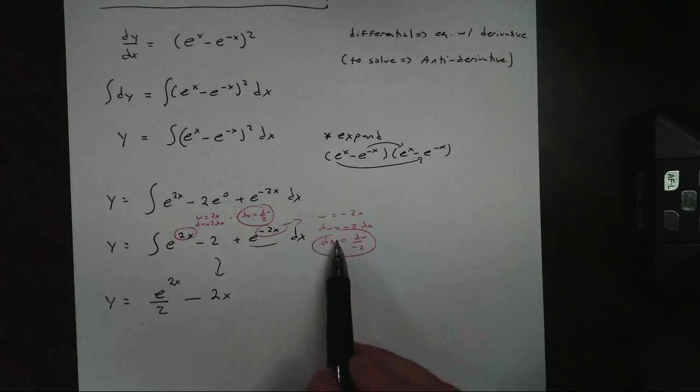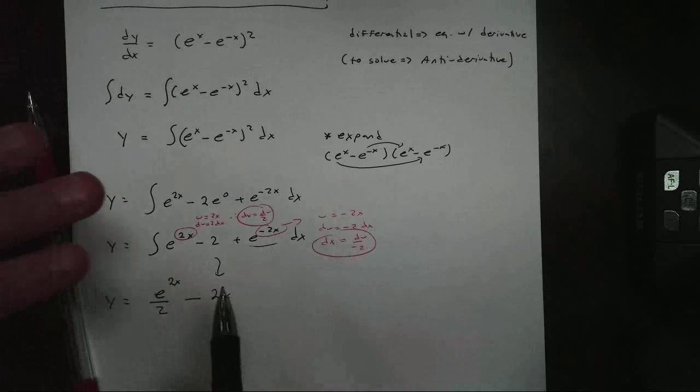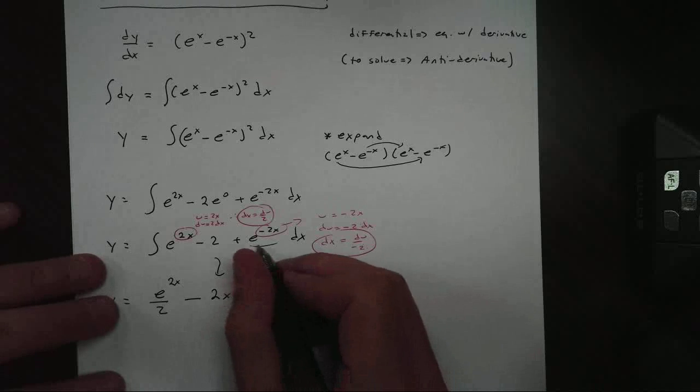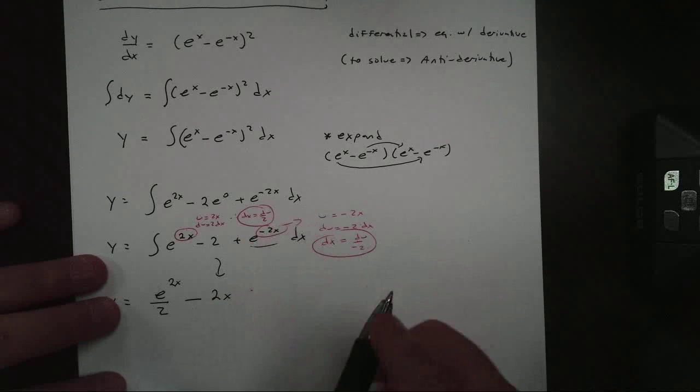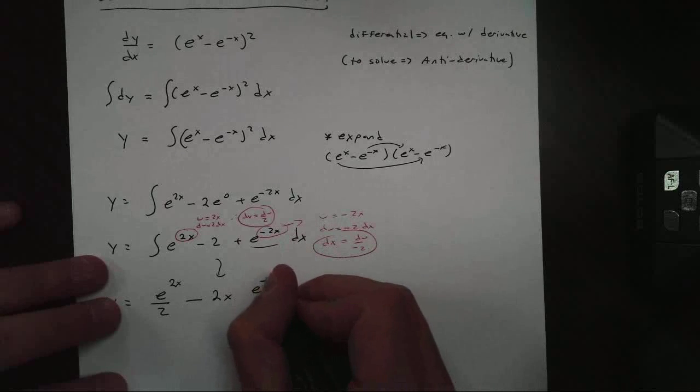And that's what I really want. As long as there's no variable here, I don't have to rewrite it necessarily. It won't work for every single one. So I'm going to get e to the u back, right? My antiderivative, e to the u, is just e to the u. So I get e to the negative 2x.